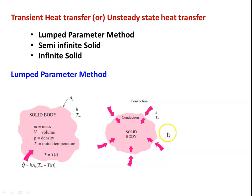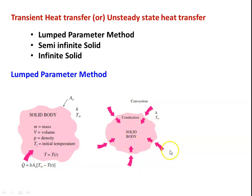Once the outer boundary receives heat energy by convection, the heat moves into the body towards the center by conduction. So the heating of any solid body using hot gases involves two modes of heat transfer: convection heat transfer outside the solid body, and conduction heat transfer inside the solid body. Any heat treatment process involves convection on the outer surface between the solid and surrounding fluid, and conduction within the solid.